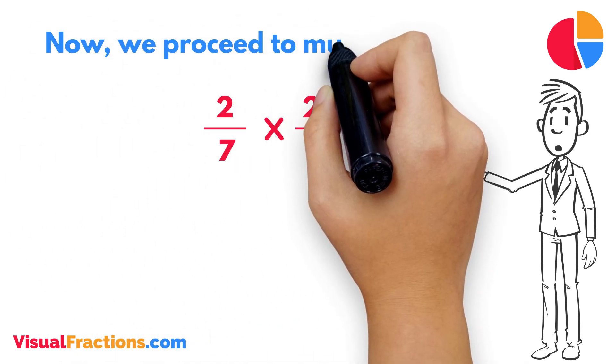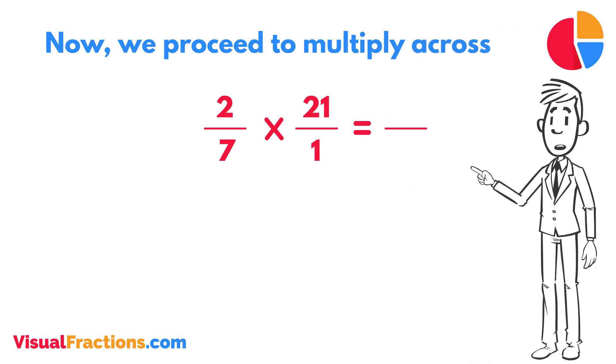Now, we proceed to multiply across. First, multiply the numerators: 2 times 21 equals 42.